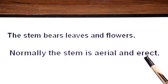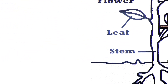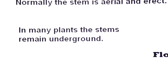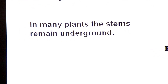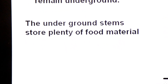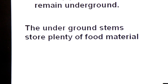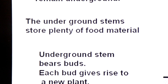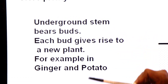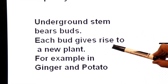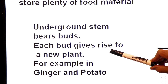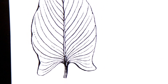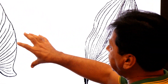Normally the stem is aerial and erect, bearing leaves and flowers. In many plants, the stem remains underground - this is called a modified stem. Underground stems store plenty of food material so they can supply food to upper parts in bad seasons. Underground stems also allow reproduction; each bud gives rise to a new plant. This is called vegetative propagation.